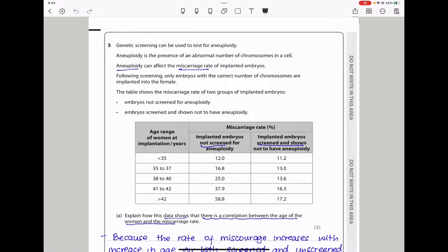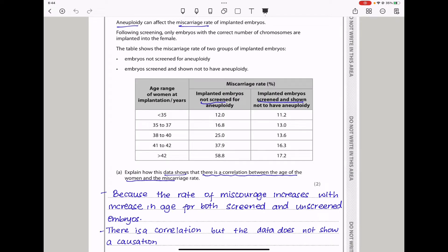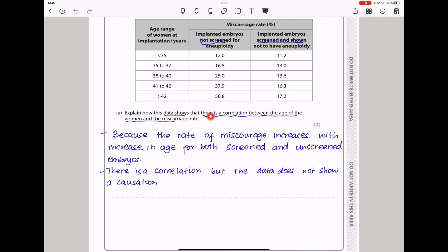Question 5. Genetic screening can be used to test for aneuploidy. Aneuploidy is the presence of an abnormal number of chromosomes in a cell. Aneuploidy can affect the miscarriage rate of implanted embryos. Following screening, only embryos with a correct number of chromosomes are implanted into the female. The table shows the miscarriage rate of two groups of implanted embryos. One group embryos not screened for aneuploidy. The other are embryos screened and shown not to have aneuploidy. Here we have the age range of women at implantation and the miscarriage rate in percentage. This is the data for implanted embryos not screened for aneuploidy, and that is the data for implanted embryos screened and shown not to have aneuploidy.